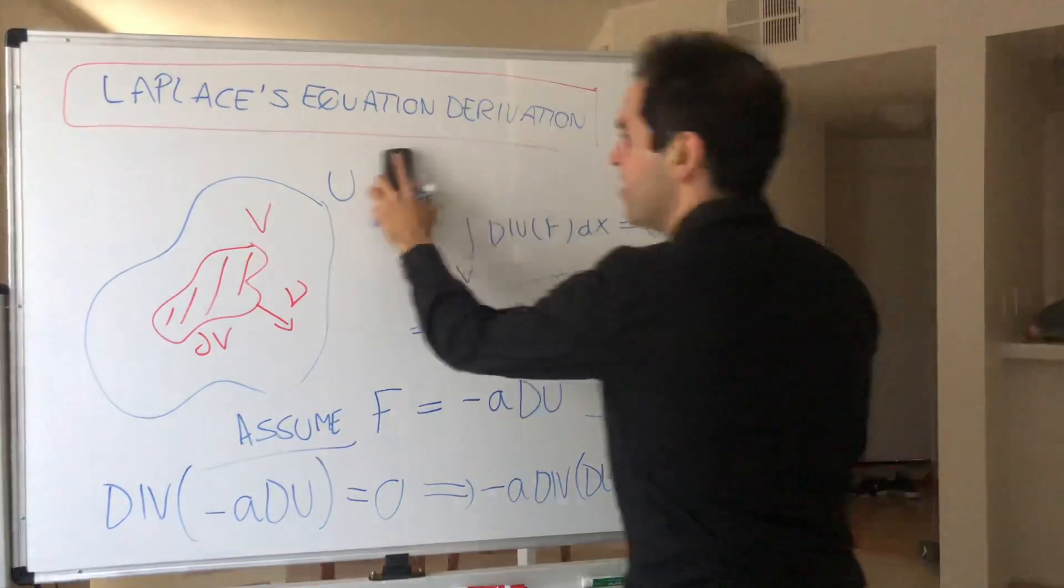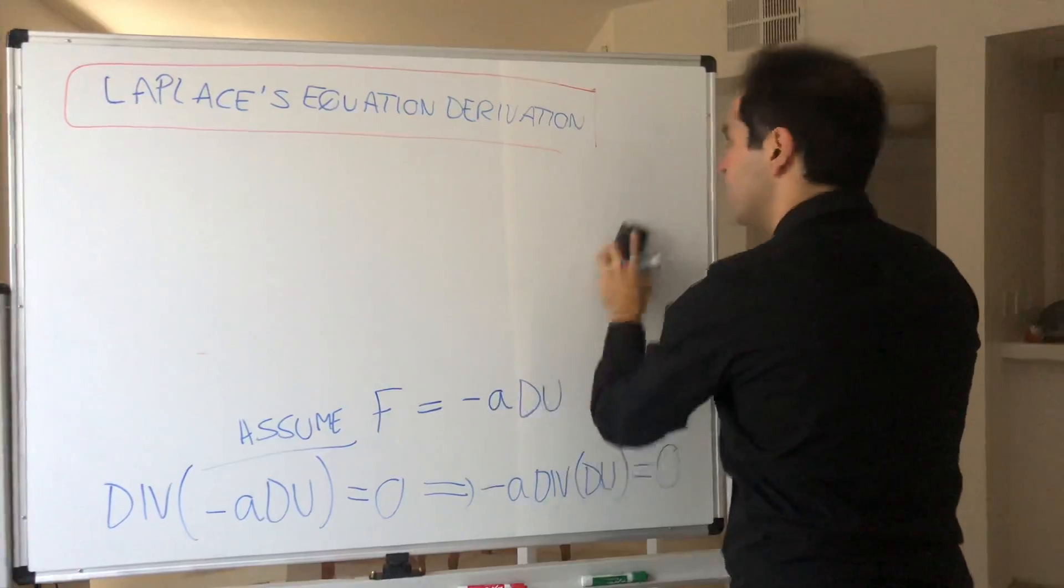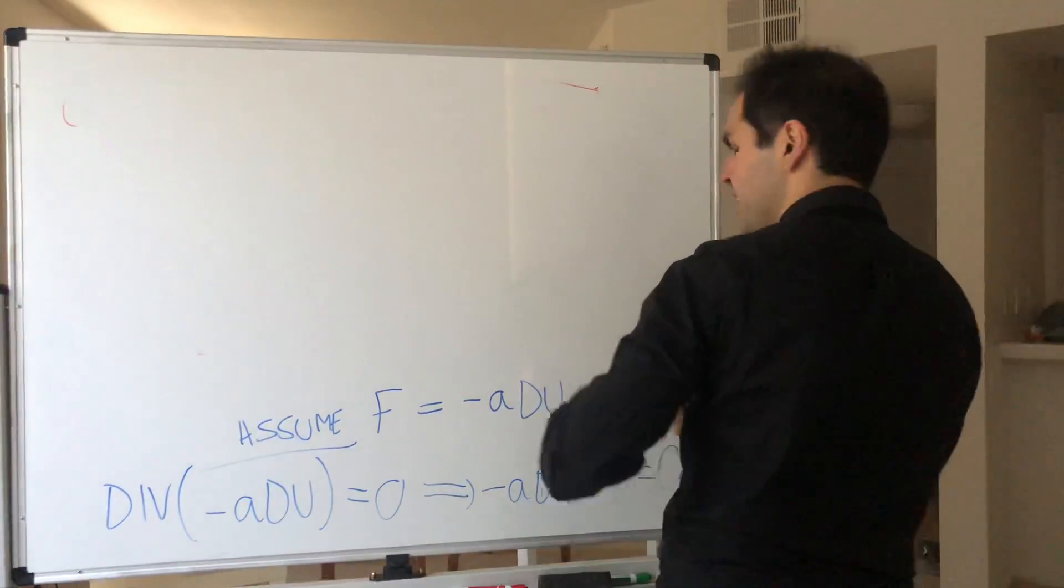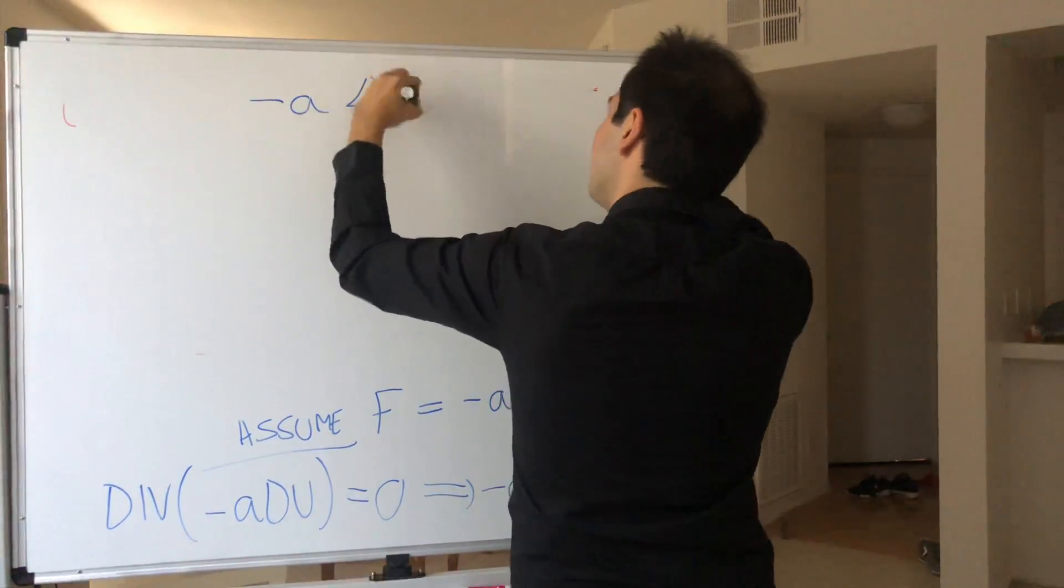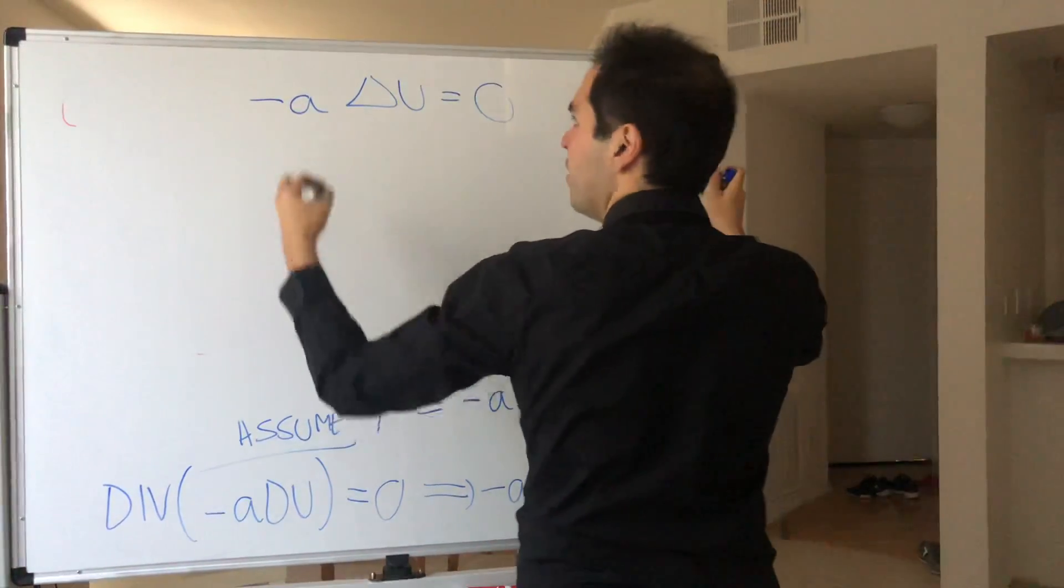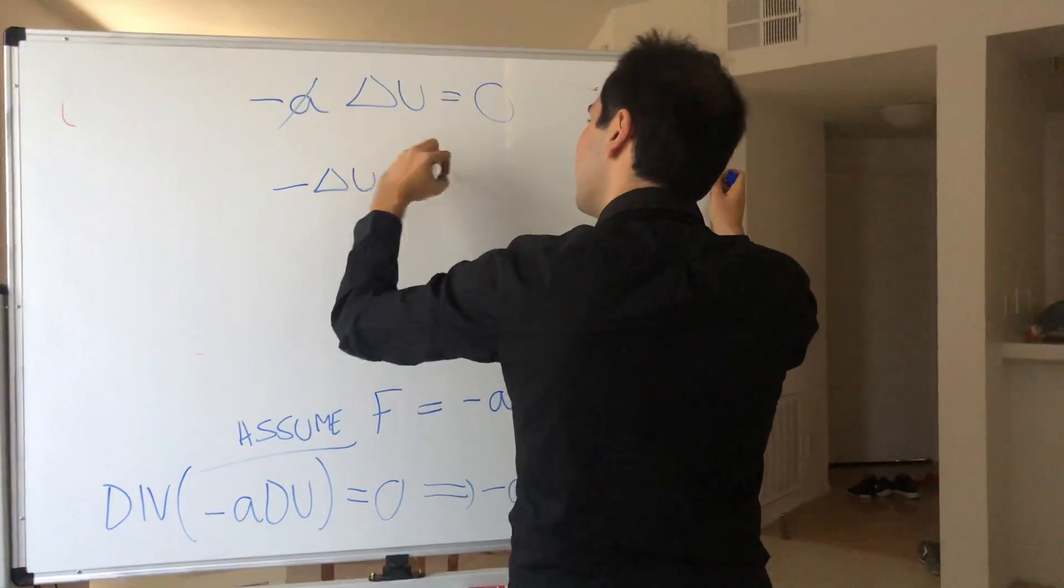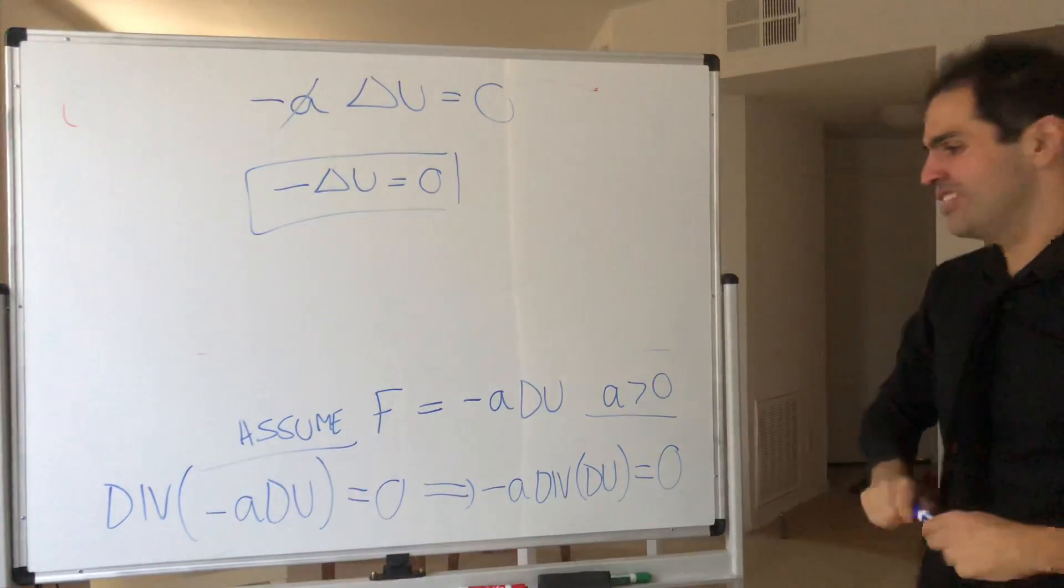That's nothing other than the Laplacian. So, in other words, what we get is simply minus A times the Laplacian of u is zero. And canceling out A, because it's positive, we indeed get Laplace's equation. So, minus Δu equals zero.